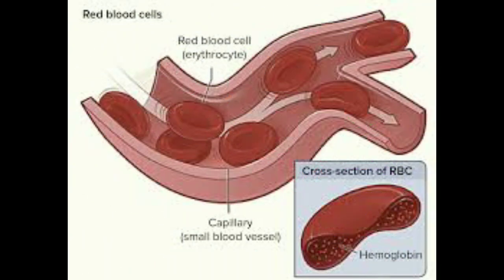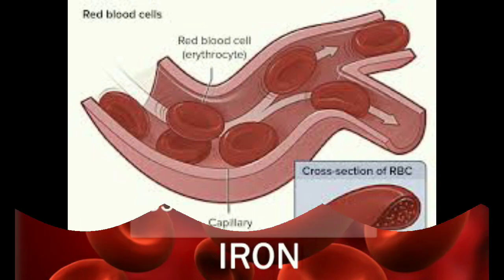Now we will discuss the major function of hemoglobin. The primary function of hemoglobin is to combine with oxygen in the lungs and then release that oxygen in the peripheral tissue capillaries.